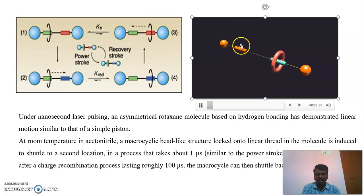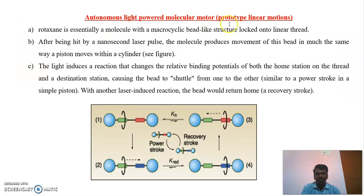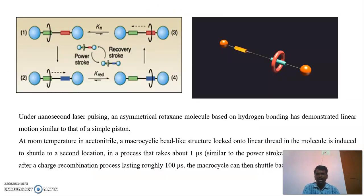If you stop the laser light, automatically this chain returns to its original place. By using light to make this ring move from here to there, that kind of motion is called autonomous light powered molecular motion.